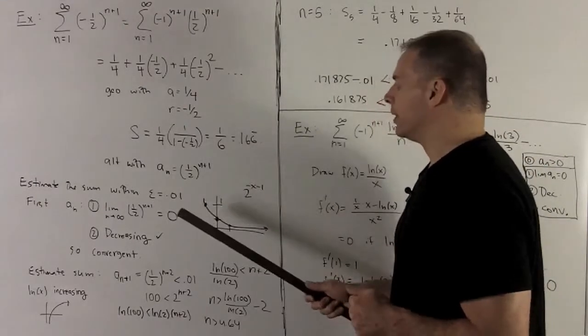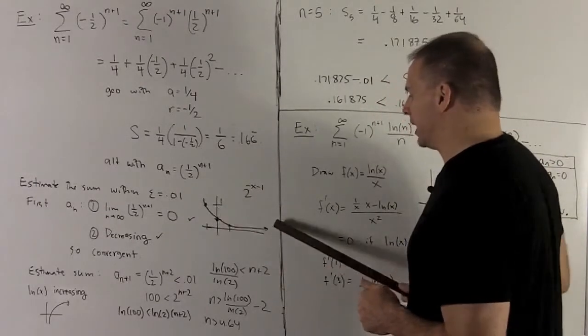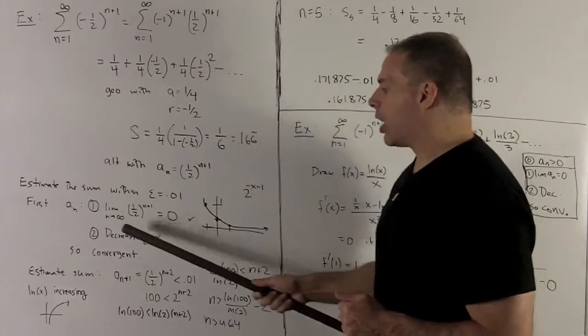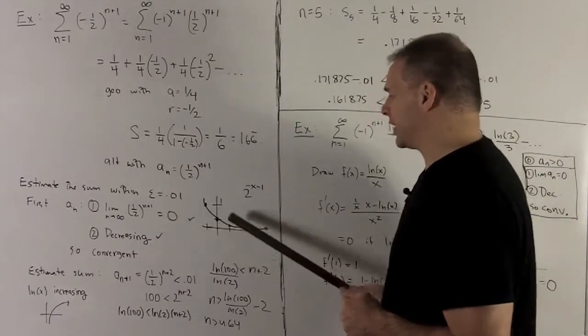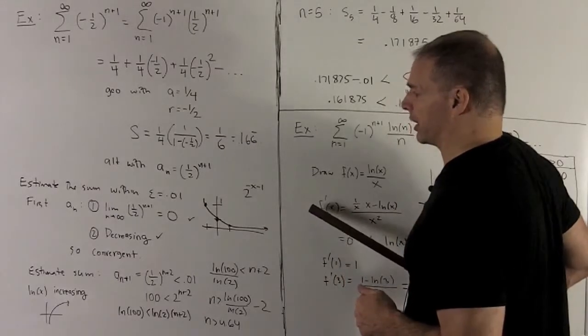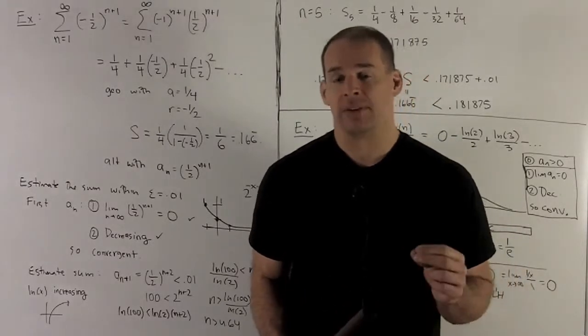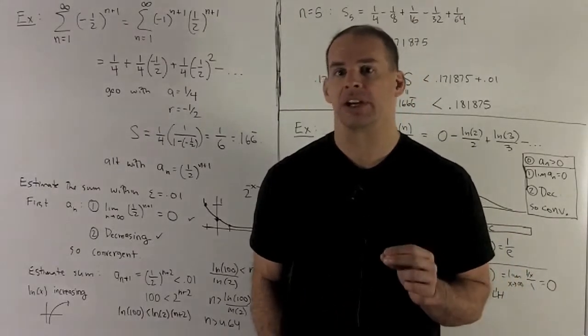So I definitely have that the limit as this goes out to infinity is equal to 0 just by looking at the graph. And I also have that's going to be decreasing because the function's decreasing. So I get my conditions 1 and 2, and that's all I need to have a convergent alternating series.